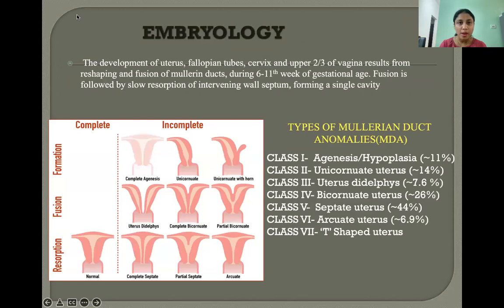Regarding embryology, the development of the uterus, fallopian tubes, cervix, and upper two-thirds of the vagina results from the reshaping and fusion of Mullerian ducts during 6–11 weeks of gestational age. Fusion is followed by slow resorption of the intervening wall septum, forming a single cavity.